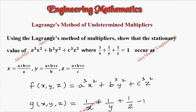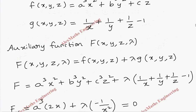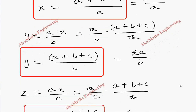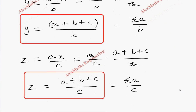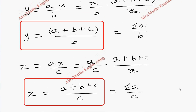As per the question, we have proved that the stationary values of the given function, subject to the given condition, occur at x = (a+b+c)/a, y = (a+b+c)/b, and z = (a+b+c)/c. Hence proved.